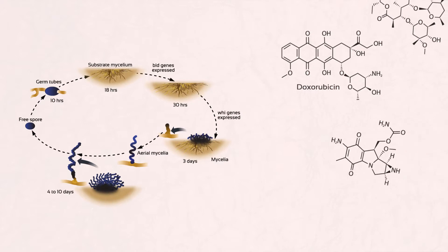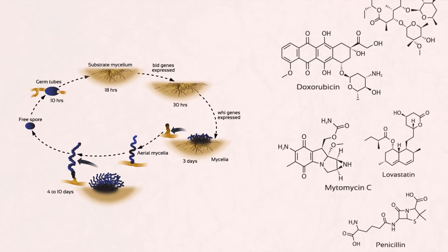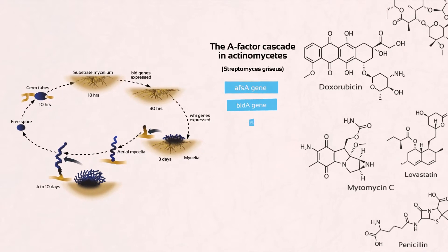In filamentous microorganisms, their life cycle and secondary metabolisms are co-regulated at the genetic level, meaning that when the life cycle is impaired, the production of metabolites is also impacted.